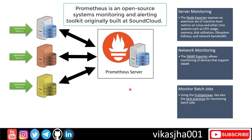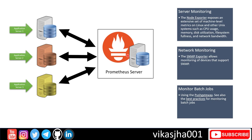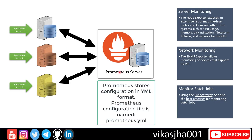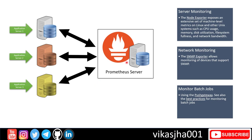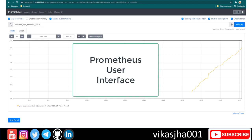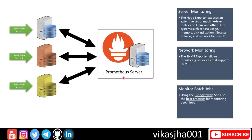The main component of Prometheus is the Prometheus server. You need at least one server running Prometheus server, and on all application servers you want to monitor you need node exporter installed. Once you install the agents on all application servers, you tell the Prometheus server to start monitoring those targets. All of that configuration happens in the Prometheus configuration file.